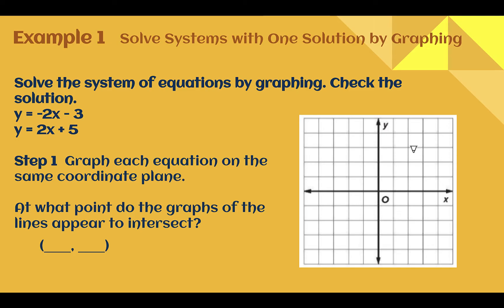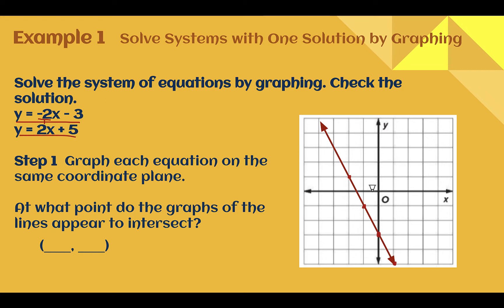Example 1: Solve systems with one solution by graphing. Solve the system y equals negative 2x minus 3 and y equals 2x plus 5 by graphing, then check the solution. To solve by graphing, we think back to modules 4 and 5 and how to graph lines in slope-intercept form, then graph each on the same coordinate plane. For the first line, y equals negative 2x minus 3, the y-intercept is at negative 3 and the slope is negative 2, or negative 2 over 1.